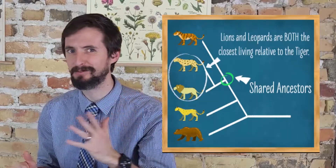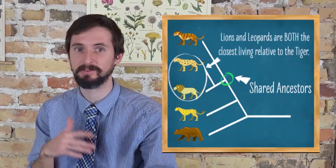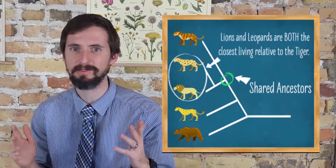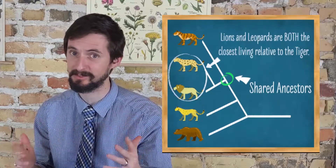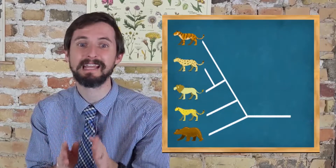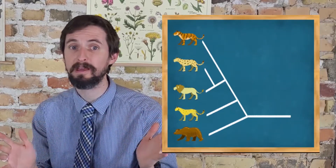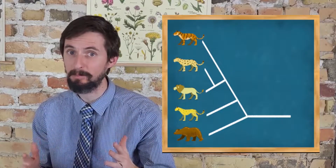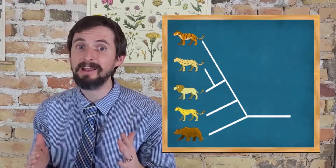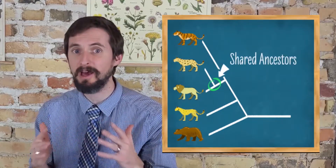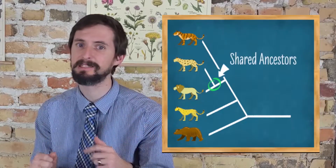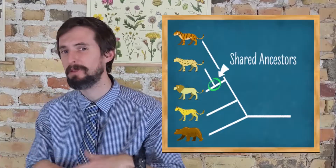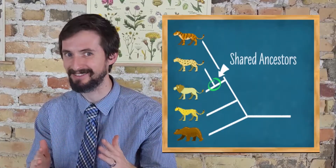Remember, when the ancestors of tigers split off from the ancestors of leopards and lions, there was no difference between the ancestors of leopards and the ancestors of lions — they were the same thing. So one of them is not more closely related to tigers than the other. Leopards and lions are more closely related to one another than they are to tigers, because they share more recent common ancestors with one another than they do with tigers. But they are both equally related to tigers.